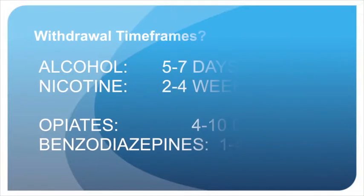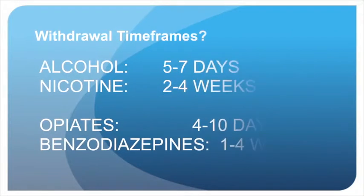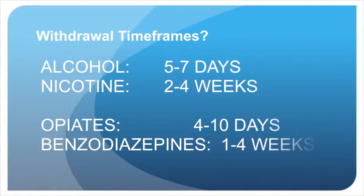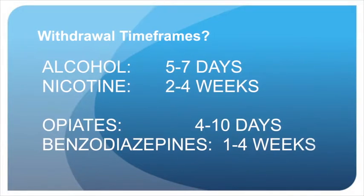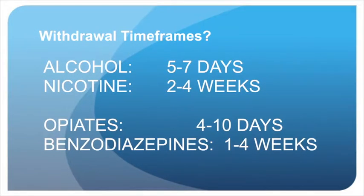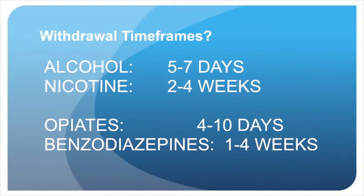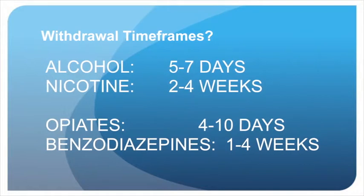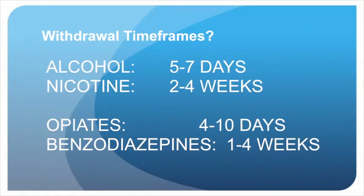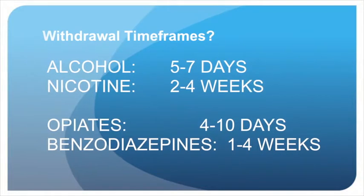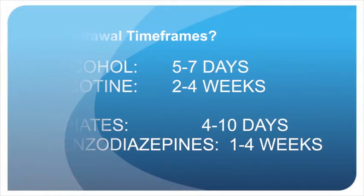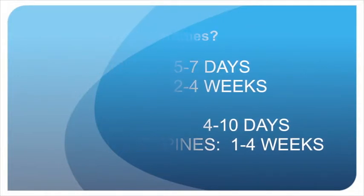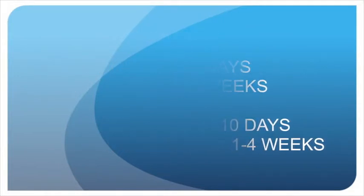What are the time frames from the onset of withdrawal to the cessation of withdrawal effects? For alcohol it's approximately 5 to 7 days. For nicotine and cigarettes it's about 2 to 4 weeks. For opioid medications it's about 4 to 10 days. And for benzodiazepines such as diazepam and alprazolam it's 1 to 4 weeks.